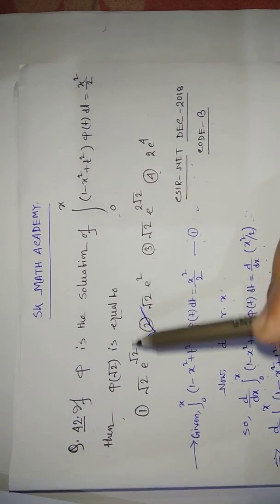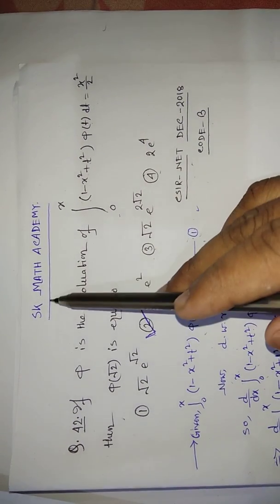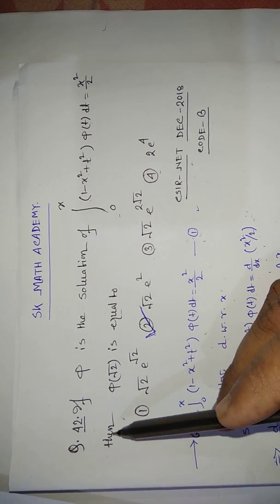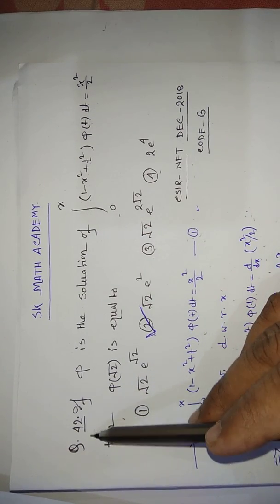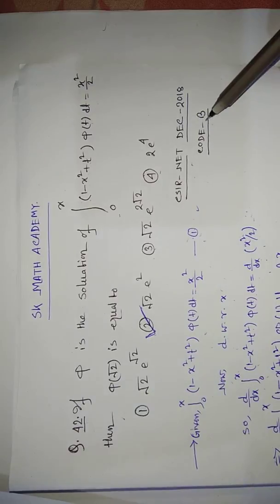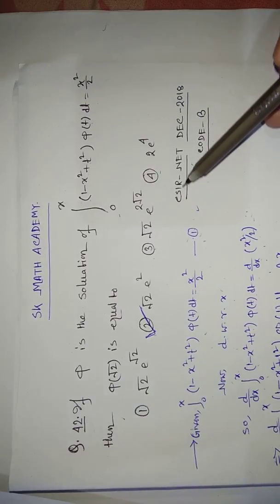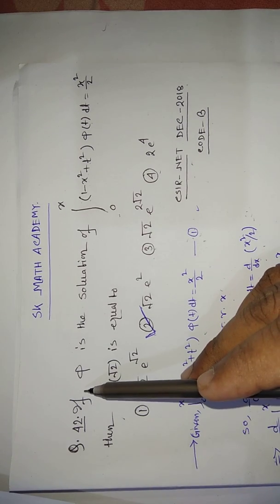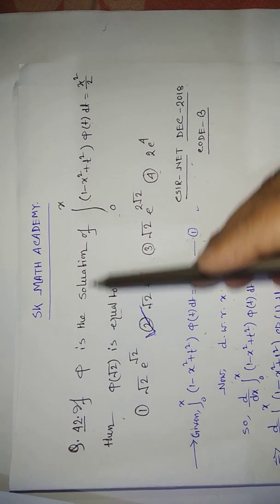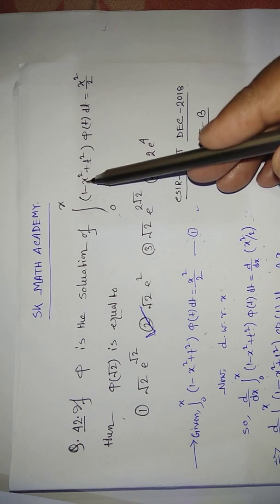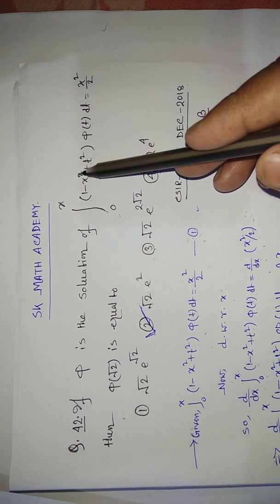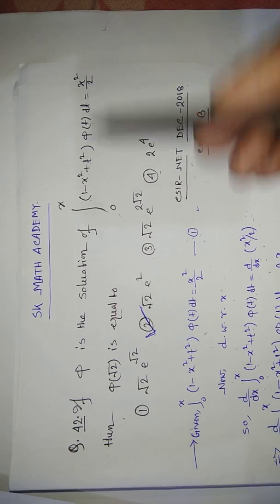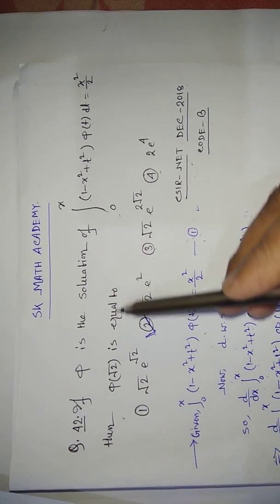Hello friends, welcome to my YouTube channel SK Math Academy. Today I will discuss question number 42, booklet code B of the CSIR NET December 2018. The question: if φ is the solution of the integral from 0 to x of (−x² + t²)φ(t) dt = x²/2, then φ(√2) is equal to?